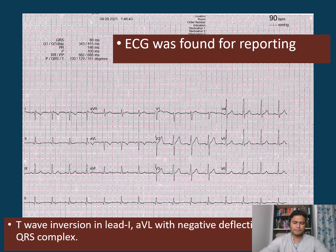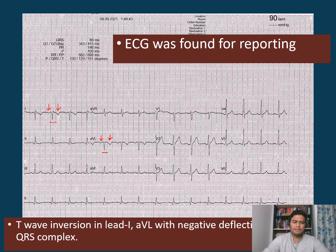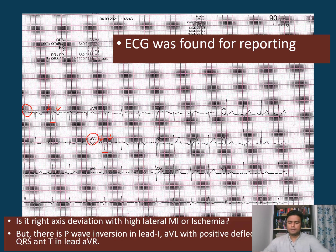Let's take a pen so you can see the T inversion in lead I — right here — and also the inverted P, which we'll check later. Same for lead AVL: there is a T inversion, the QRS is also negative, and the P is also inverted. So everything is inverted in lead I and in lead AVL.